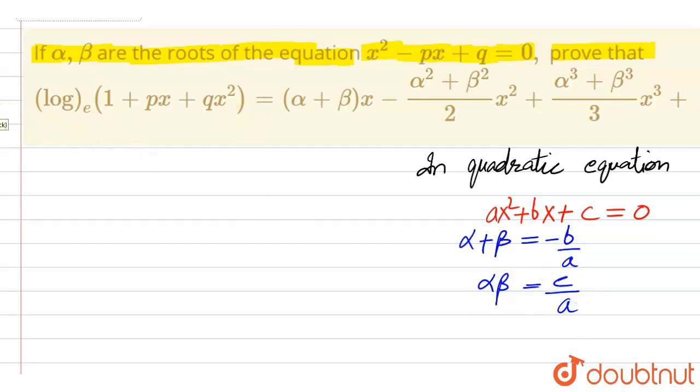So here, we have equation. One given equation is x squared minus px plus q equal to 0. So if alpha, beta are roots, then alpha plus beta would be minus b by a. Here we have p.